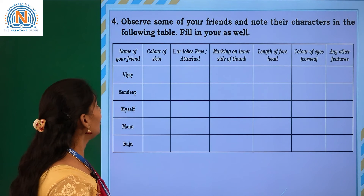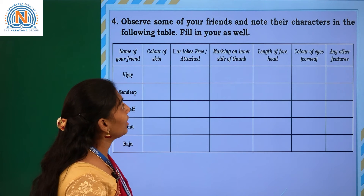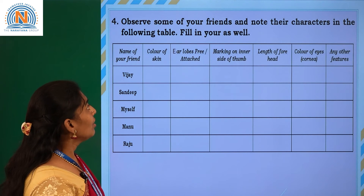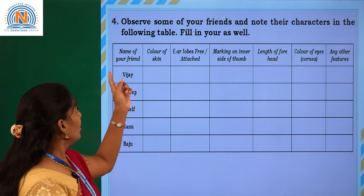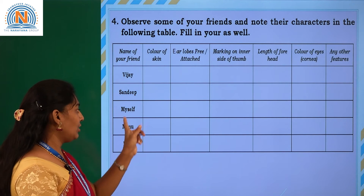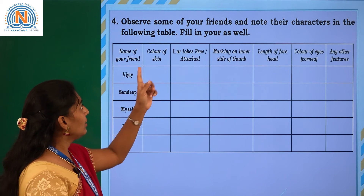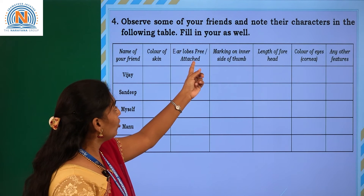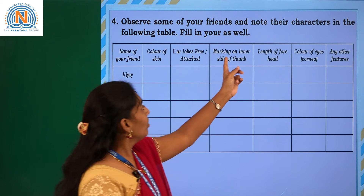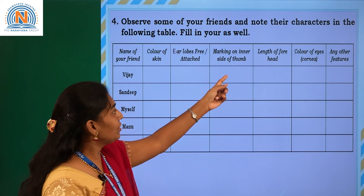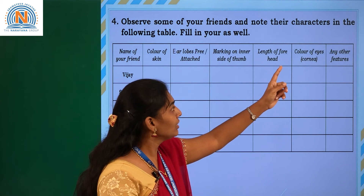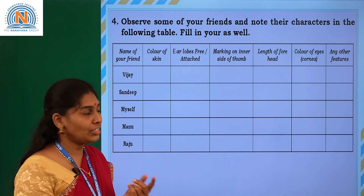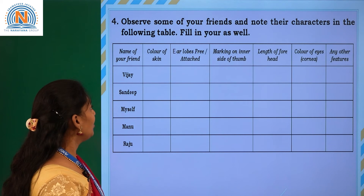The next question: a table has been given. Observe some of your friends and note their characters in the following table. The characters given are: colour of the skin, earlobes free or attached, marking on the inner side of the thumb, length of forehead, colour of eyes, and any other features.